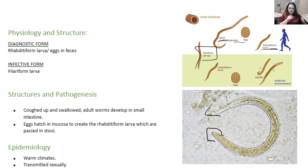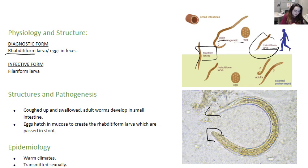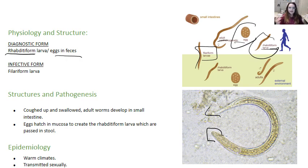It has various stages of its life cycle. The reason I point that out is that the diagnostic form is either the rhabditiform larvae, which you can find here, or eggs in the feces, which you can see here. The filariform larvae is actually how your patient gets infected.